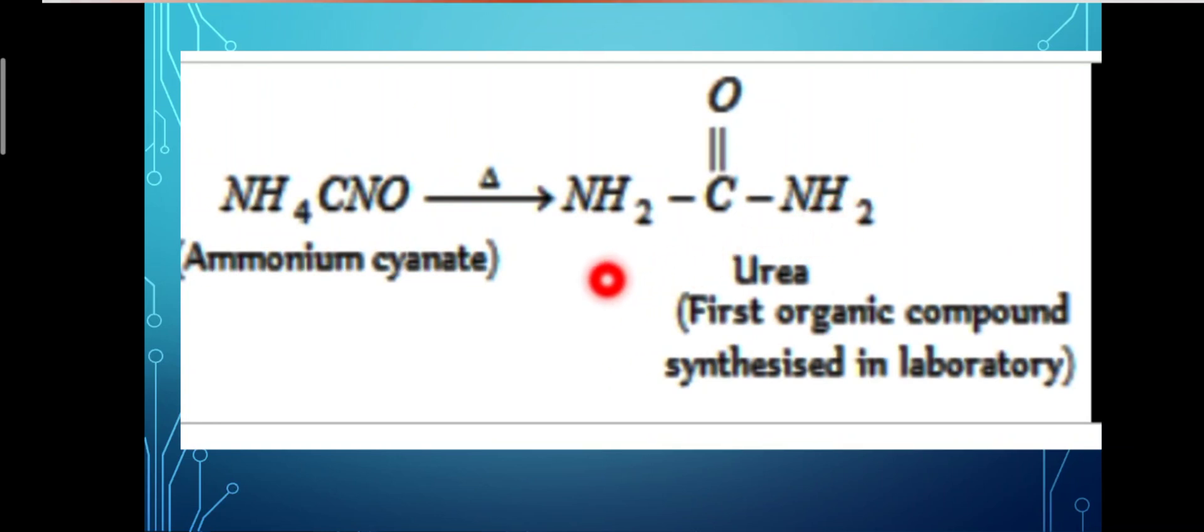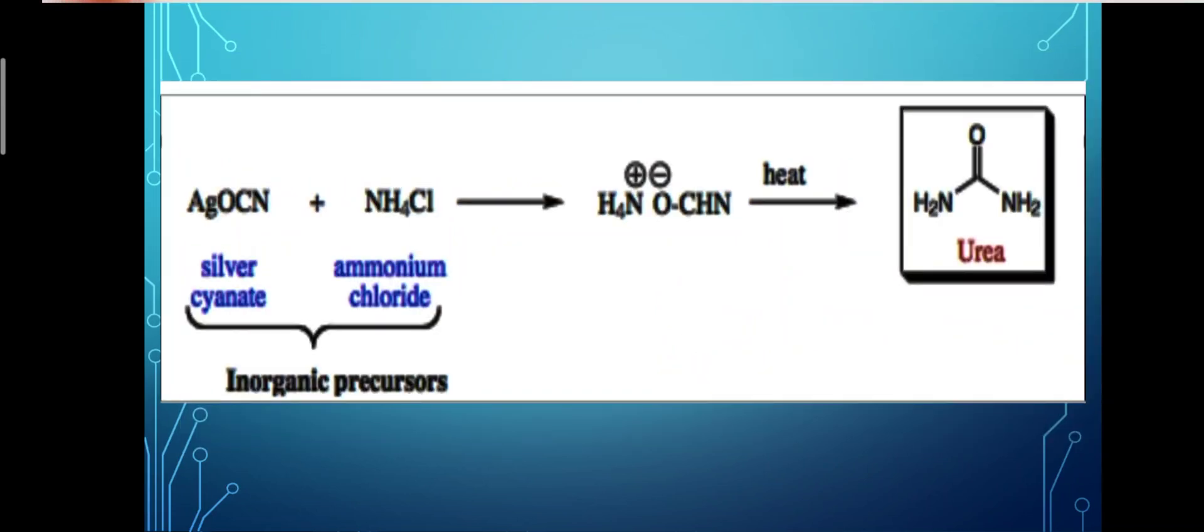Urea is the first organic compound synthesized in a laboratory. Ammonium cyanide is obtained when silver cyanide and ammonium chloride are reacted. These are both inorganic precursors. When they react, they form ammonium cyanide, NH4+ and OCN-. When heated, it is converted into urea.